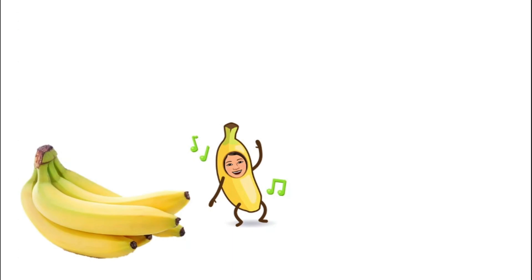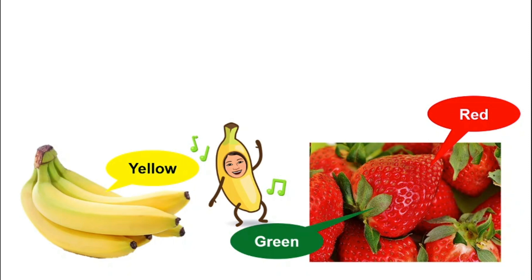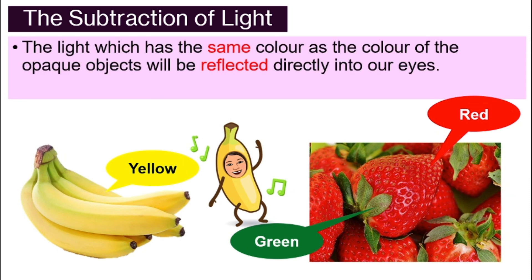When we look at different fruits — we look at a banana, we know it is yellow; when we look at strawberries, we know the fruit is red and the leaf is green — how does our eyes see colors? This is because of the subtraction of light. The subtraction of light simply means that the light that has the same color as the color of the opaque objects that we are seeing will be reflected directly into our eyes.